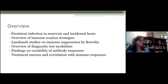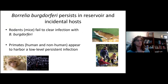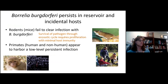Borrelia burgdorferi persists in both its reservoir and incidental hosts. In nature, the white-footed mouse is the primary reservoir or natural host for the Lyme disease spirochetes, and we know that mice fail to clear the infection with Borrelia burgdorferi. This is because survival of the pathogen through the enzootic cycle requires the ability to proliferate with minimal host immunity. Both human and non-human primates appear to harbor a low-level persistent infection, and we would be considered incidental hosts.